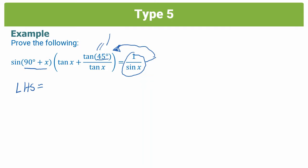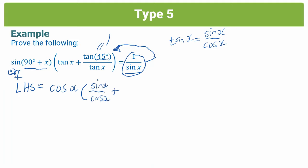So our left-hand side is going to be equal to cos x — remember sine of (90 plus x) is a complementary angle, so we switch it with its co-function cos x. We check: 90 plus x is in the second quadrant, and sine is positive in the second quadrant, so we get a positive cos x. That's multiplied into tan x. I'm going to immediately replace tan x with sine x over cos x using the identity, because on the right-hand side there are no tan x terms, only sine x — so we have to get rid of that tan. We rewrite tan x as sine x over cos x, plus we replace tan 45 with 1, all over tan x, which we also replace with sine x over cos x.